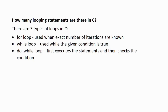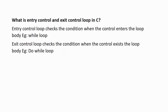Next question: how many looping statements are there in C? There are three types of loops in C: the FOR loop, the WHILE loop, and the DO WHILE loop. The FOR loop is used when the exact number of iterations is known — for example, if we want to print the name of five students, we execute the print statement exactly five times, so we use a FOR loop. The WHILE loop iterates while a given condition is TRUE; as soon as the condition evaluates to FALSE, it stops. The DO WHILE loop first executes the statements and then checks the condition.